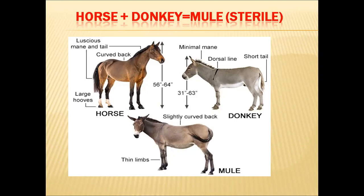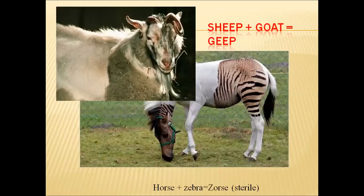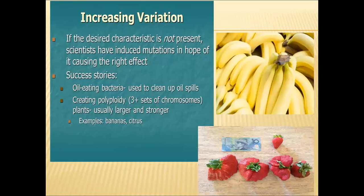In animals, hybridization of horse and donkey results in the mule, which is sterile due to chromosome number differences. Breeding between tiger and lion results in a hybrid called liger. Sheep and goat breeding results in a geep, and horse and zebra results in a sterile animal.